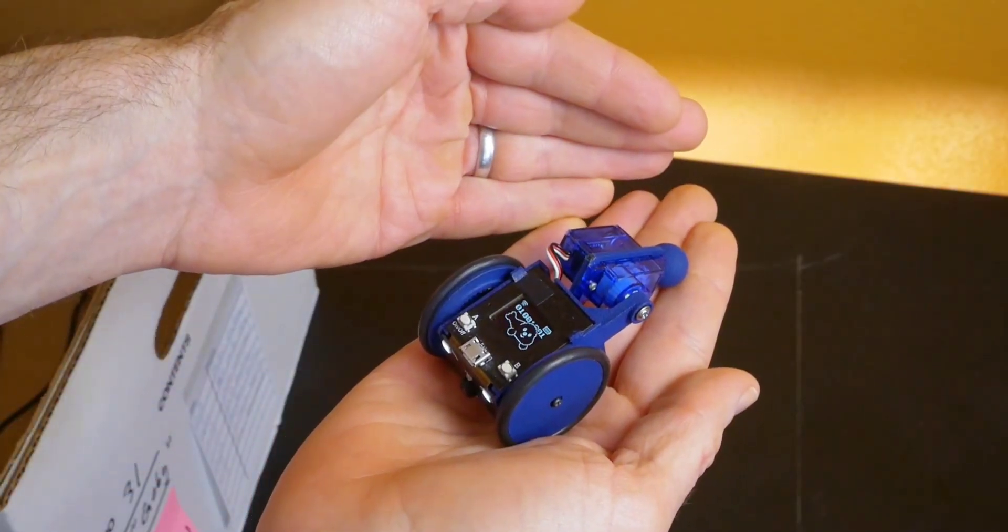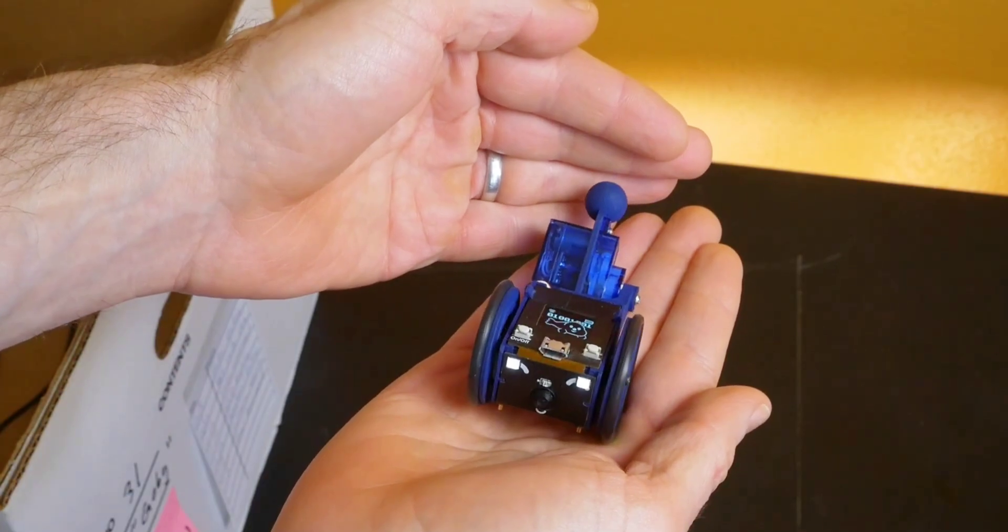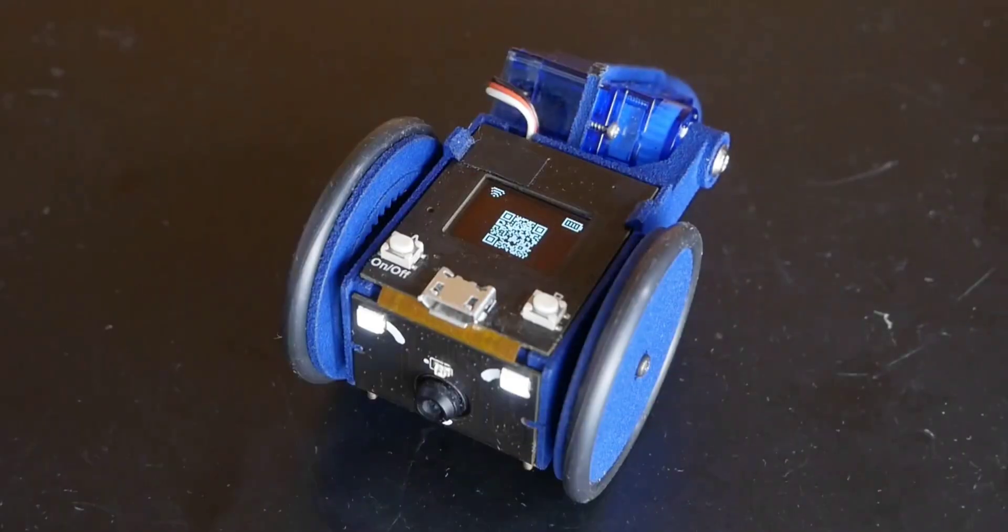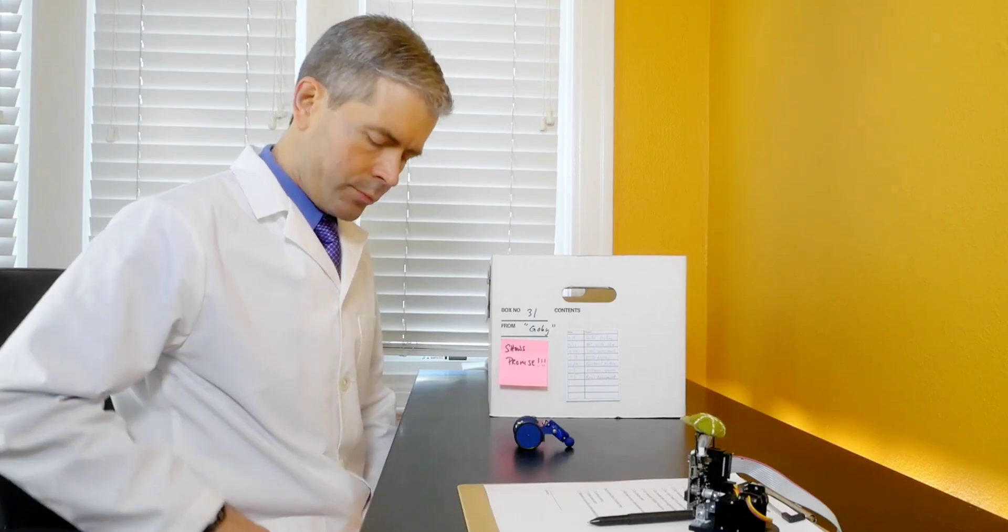Unless you're some boring, unimaginative schmuck, chances are you've sometimes wondered what the world looks like from a tiny creature's point of view. Well, the Gobi robot will show you, as you remotely control it via a simple online dashboard.